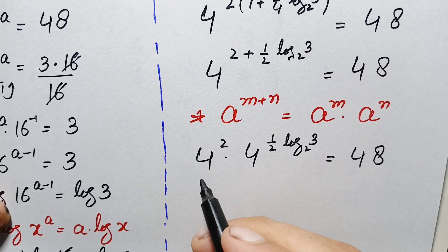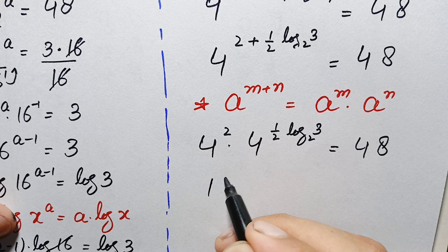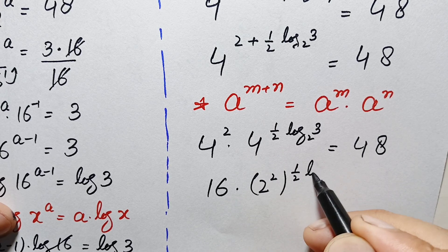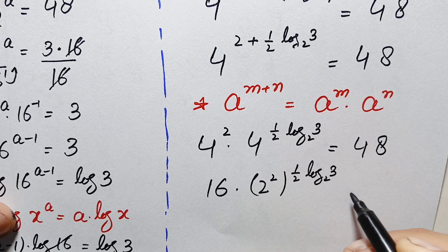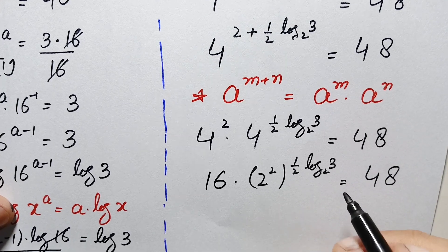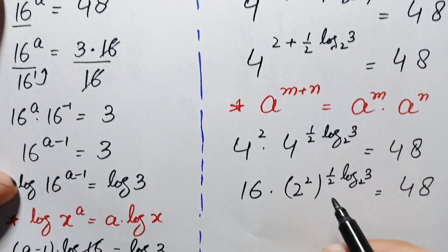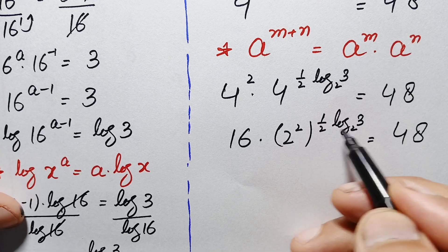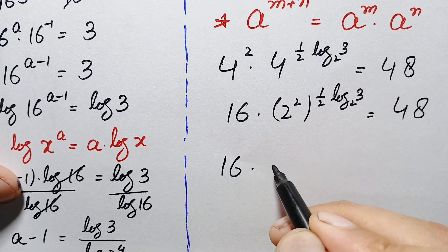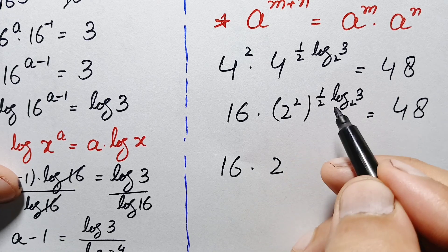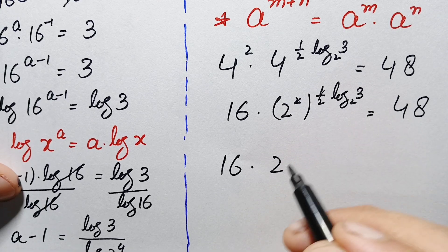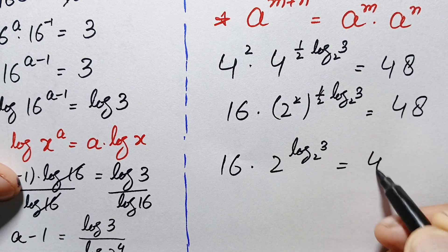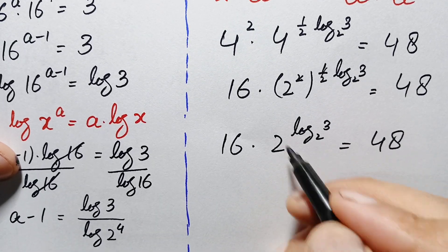Using this identity, we split the expression: 4 raised to power 2 times 4 raised to power one-half times log base 2 of 3 equals 48. Now 4 raised to power 2 is simply 16, and we rewrite 4 as 2 squared. Using the exponential identity (multiply the powers), the 2 and one-half cancel, leaving 16 times 2 raised to power log base 2 of 3 equals 48.